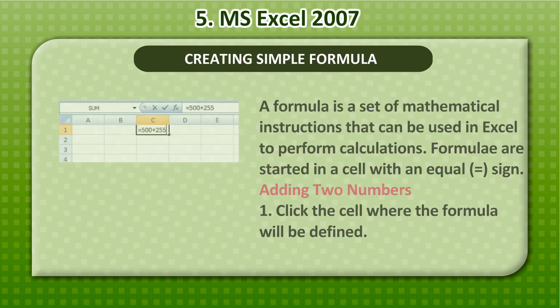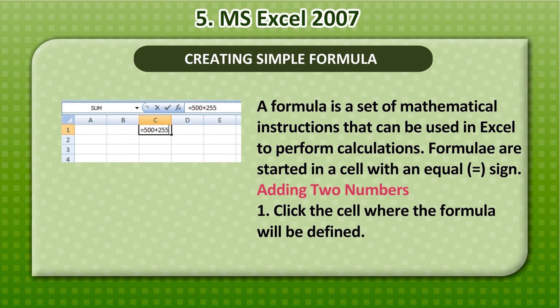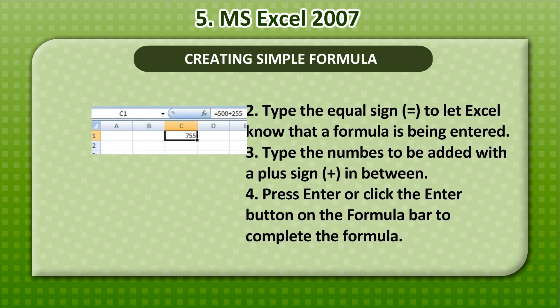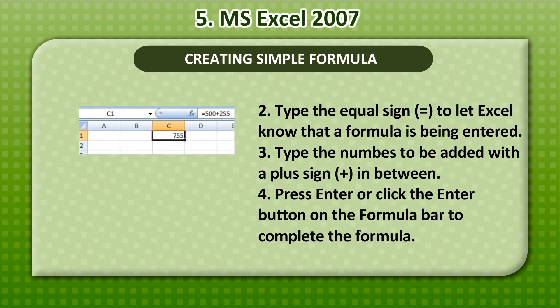Creating Simple Formula: A formula is a set of mathematical instructions that can be used in Excel to perform calculations. Formulas are started in a cell with an equal sign. Adding two numbers: 1. Click the cell where the formula will be defined. 2. Type the equal sign to let Excel know a formula is being entered. 3. Type the numbers to be added with a plus sign in between. 4. Press Enter or click the Enter button on the formula bar to complete the formula.